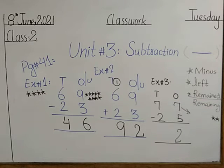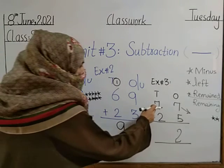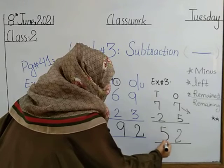Now the tens place: 7 minus 2 is equal to what? Farba, you tell me — good. Seven minus two is equal to 5.